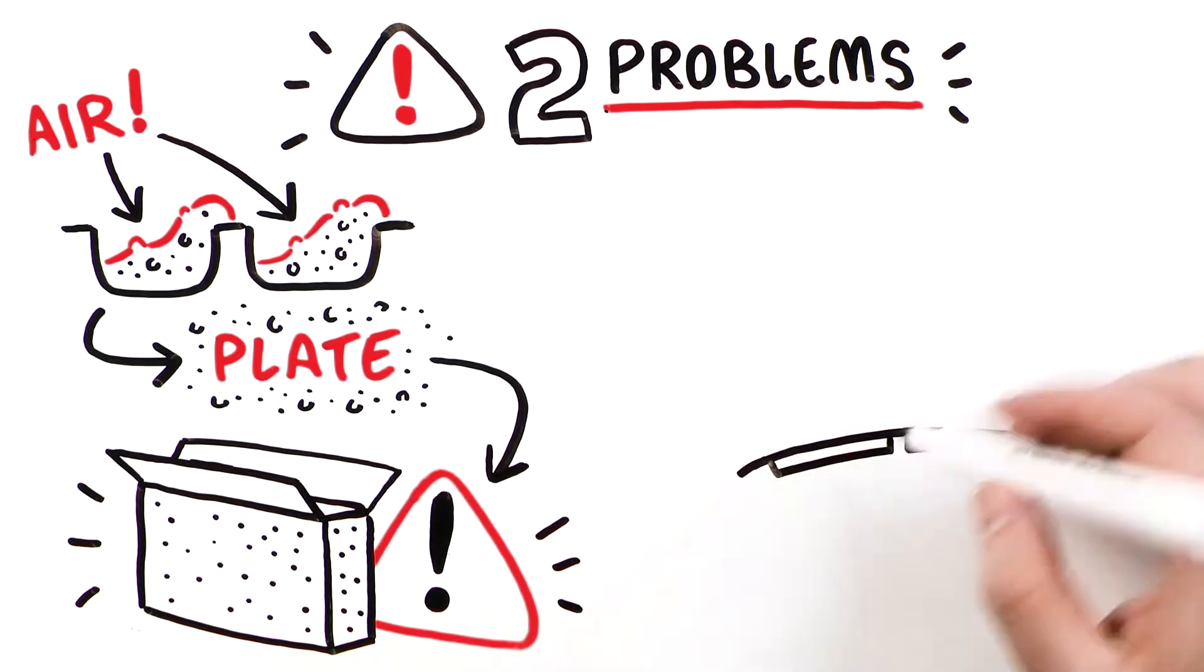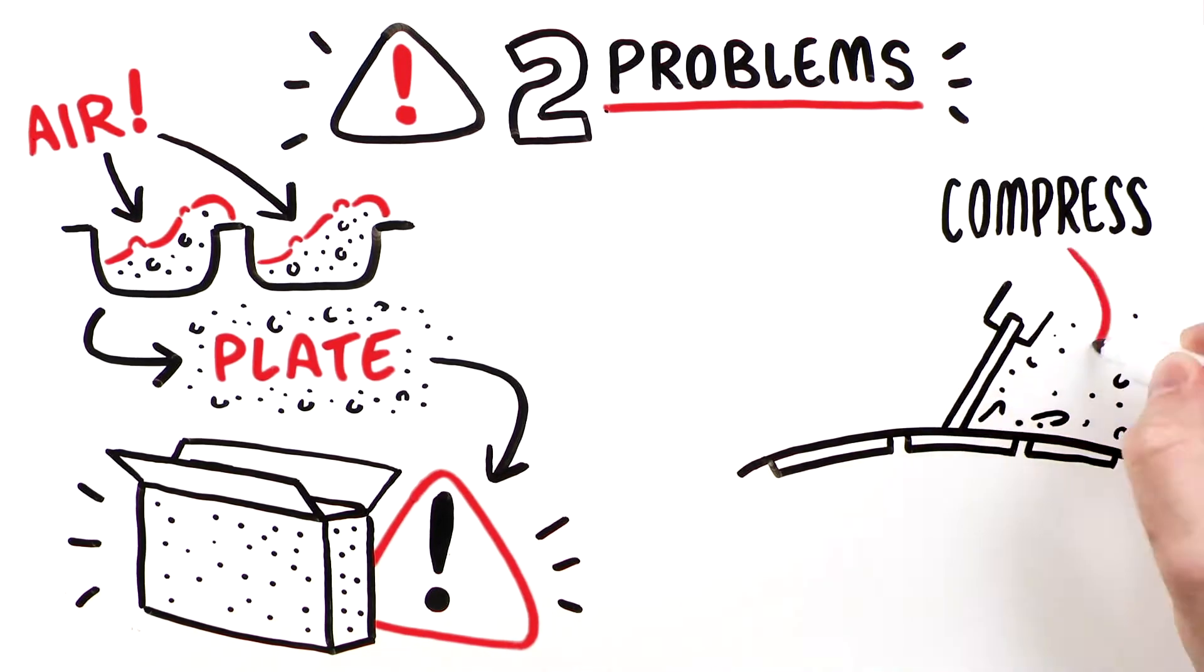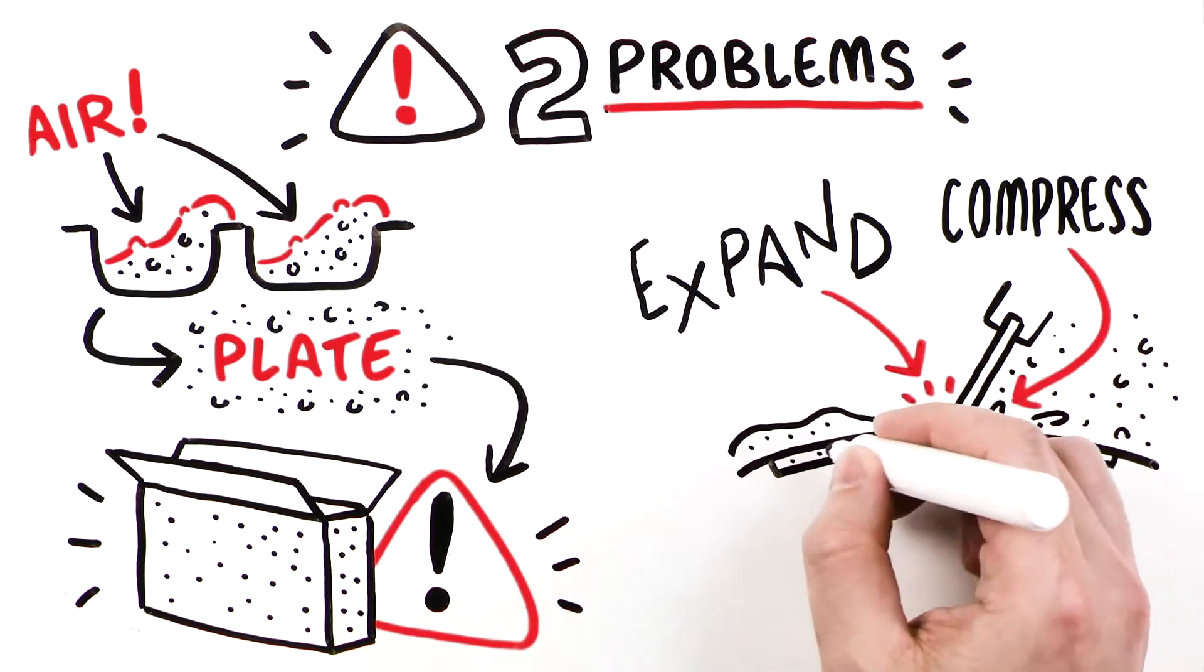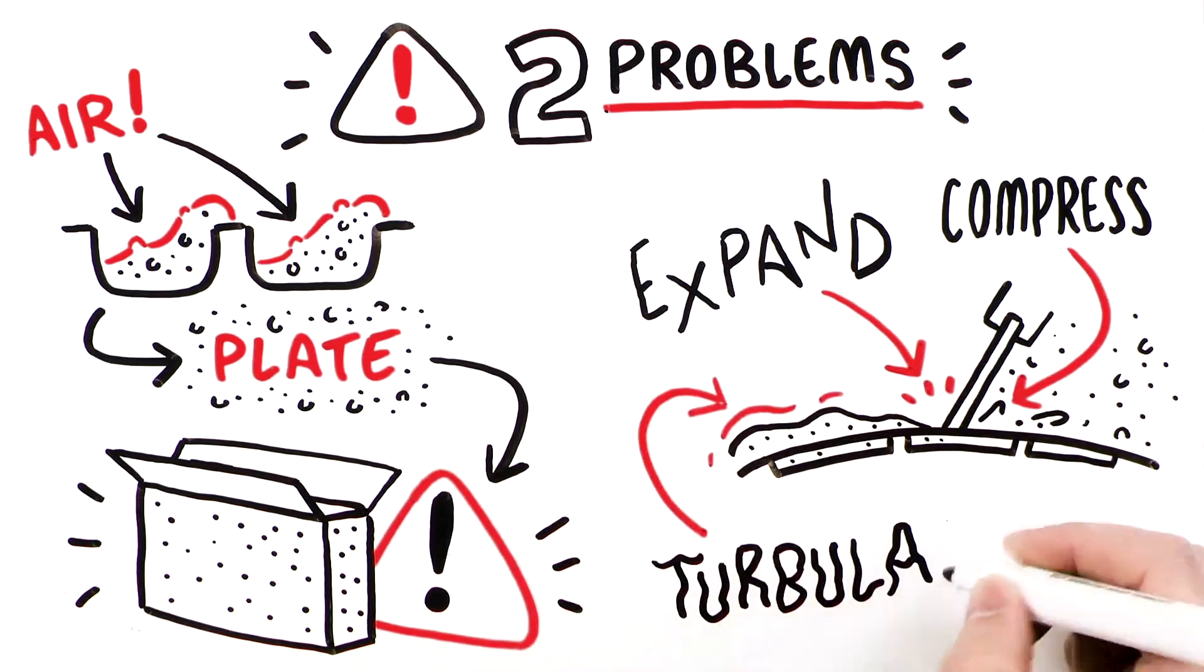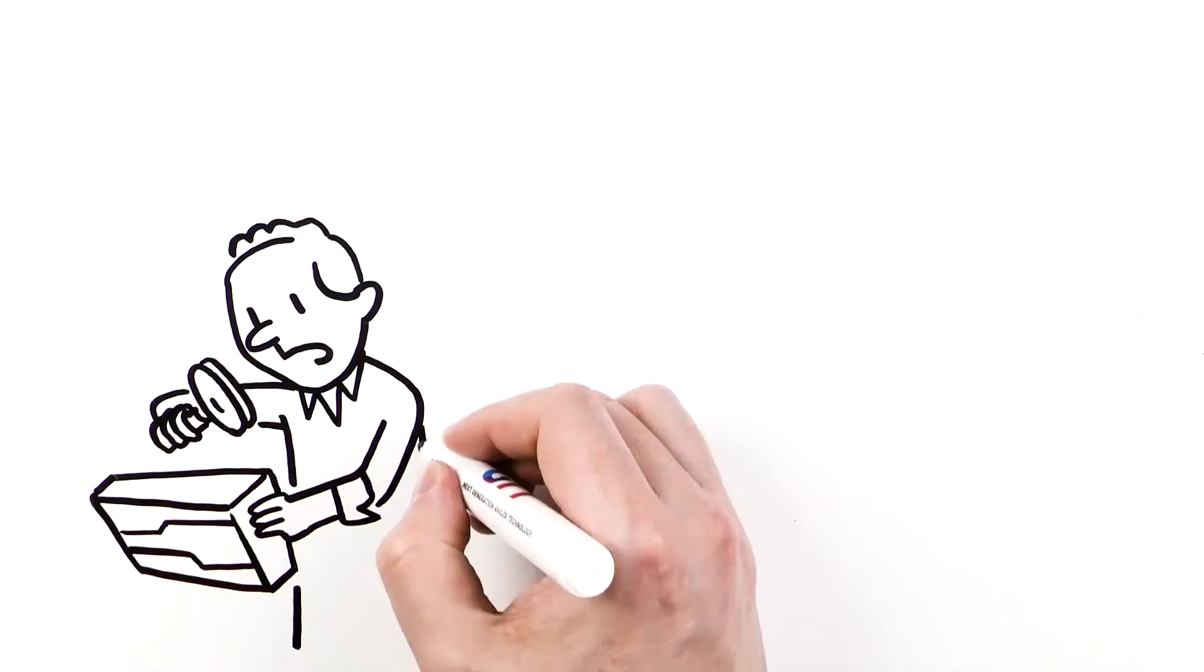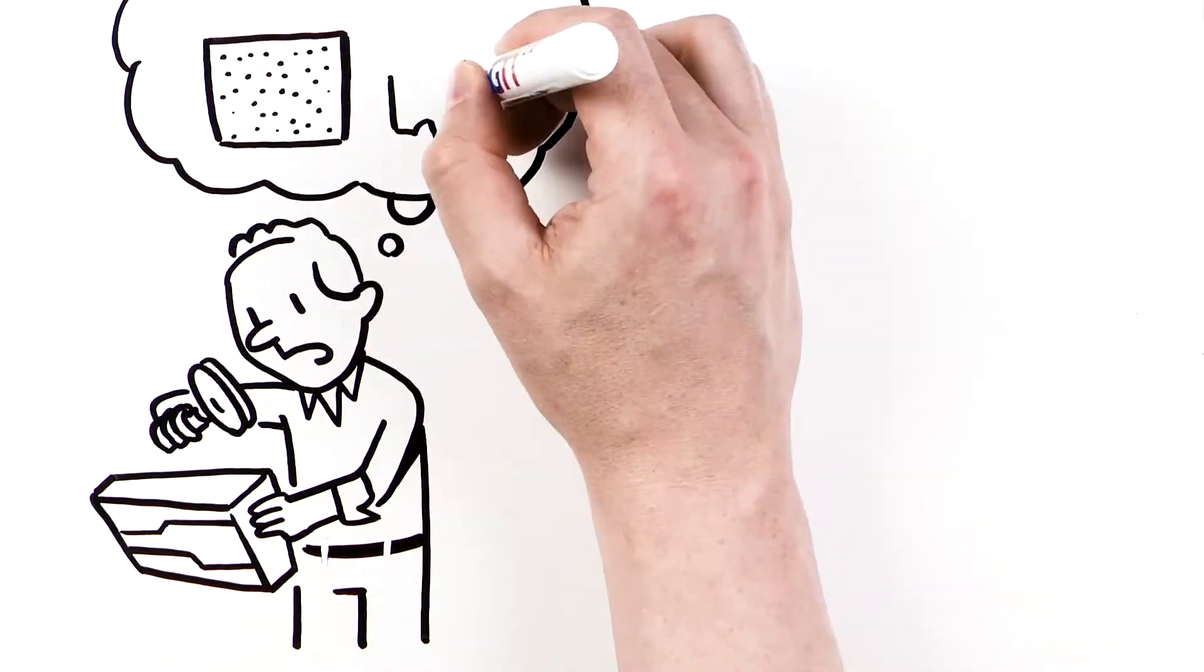Second, as the anilox cells pass under the Doctor Blade, the air is compressed. This air then expands as cells leave the chamber, making the anilox surface appear turbulent. These micro-bubbles and air compression and subsequent air expansion results in pinholes in white ink laydown.